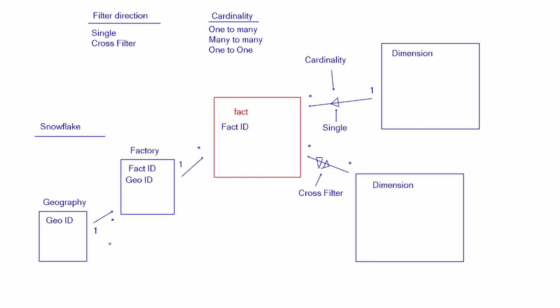The snowflake schema is an extension of the star schema with multiple dimension layers. We always want to start with the star schema and move to the snowflake schema only if needed. Ideally we want a single filter relationship. If we have to, we'd use a cross filter direction, but this opens up potential problems when using DAX if the filter is traveling to both dimension tables.